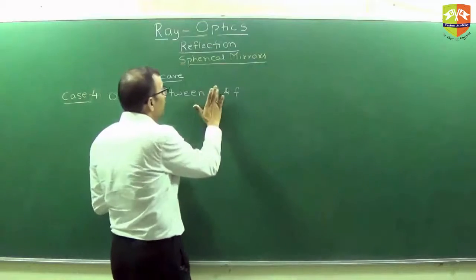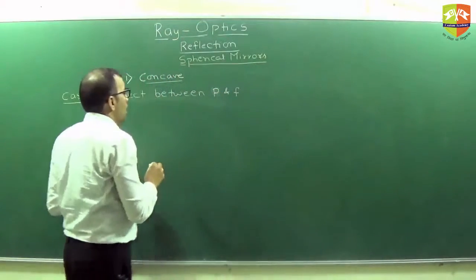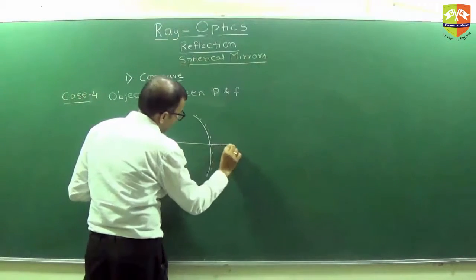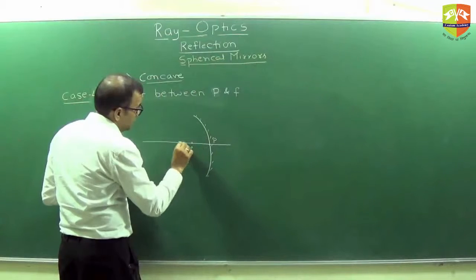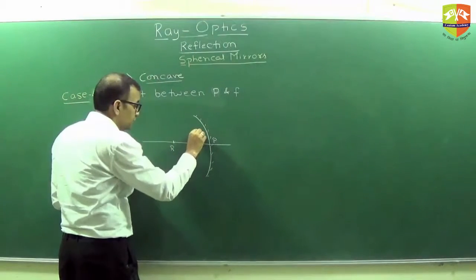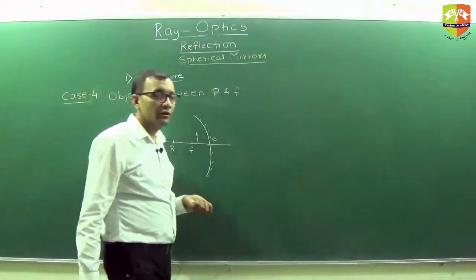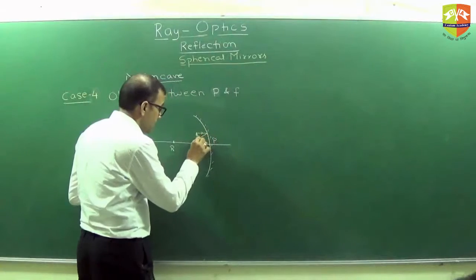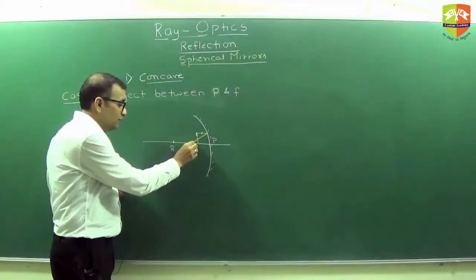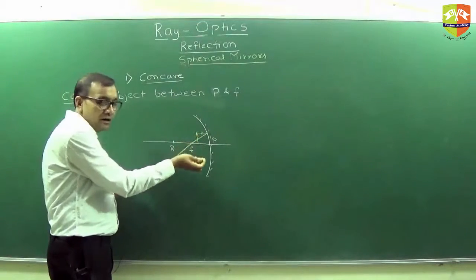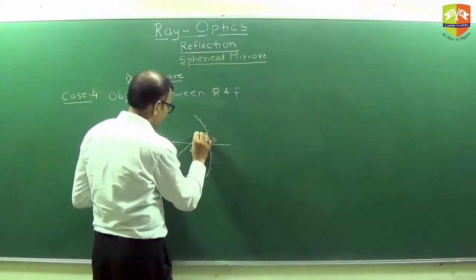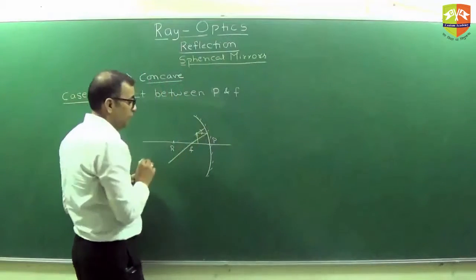Object is between P and F. This is P, this is F and this is R. Here is the object. Find out its location. This parallel ray will go from focus and what will you do now? Can you draw a line passing through focus? If something line passing through focus, it will never hit the mirror, right?